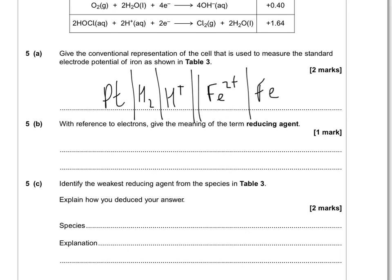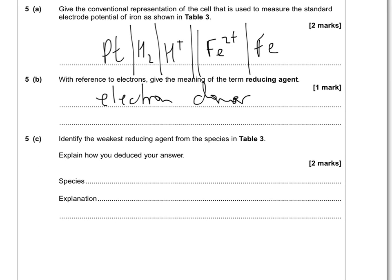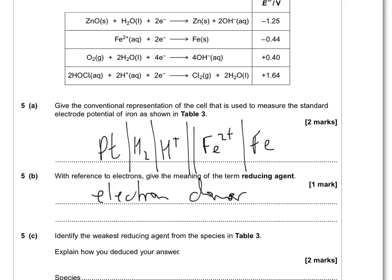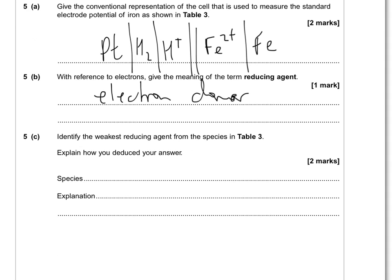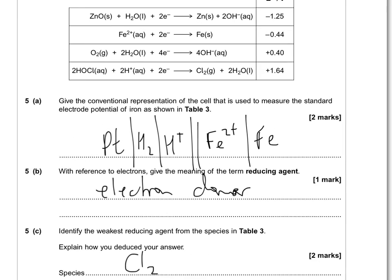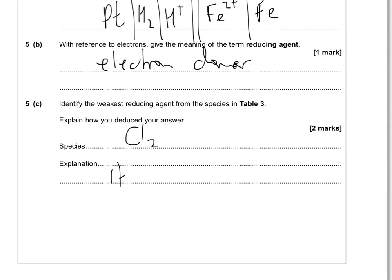Define the term reducing agent with reference to electrons. The reducing agent has been oxidised itself — it's losing electrons, or giving electrons to the other species, so it is an electron donor. To identify the weakest reducing agent from the species in table 3: the weakest reducing agent is the one worst at losing electrons, which is the most positive one. That is chlorine. All of these are written as if being reduced, so chlorine is the weakest reducing agent — it has the most positive electrode potential.